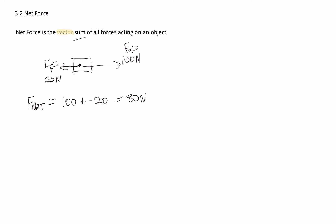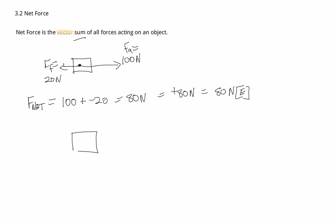We could write it as 80 newtons, positive 80 newtons to indicate to the right, or 80 newtons east — they're all the same thing. Obviously if we've got forces going in a linear fashion, it's pretty basic — you're just adding and subtracting.